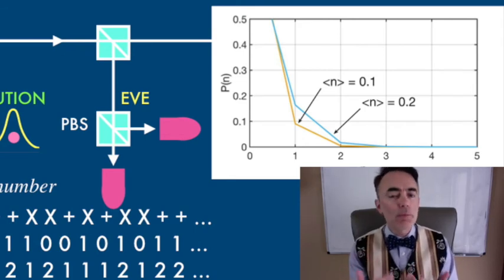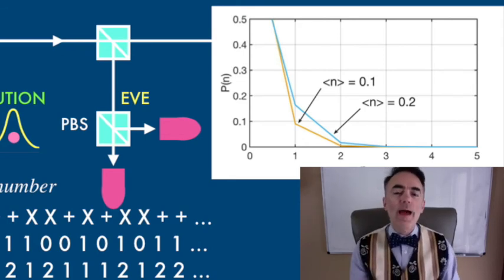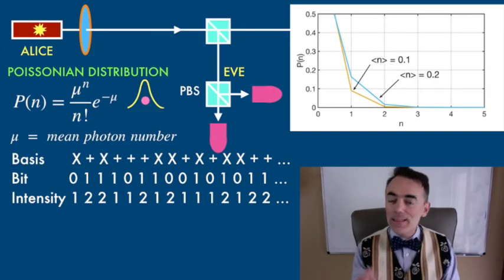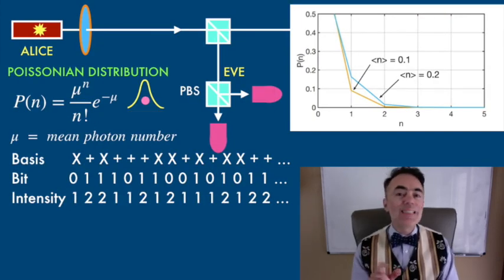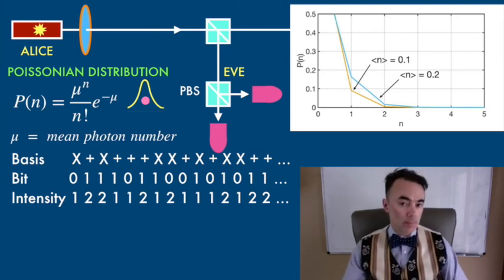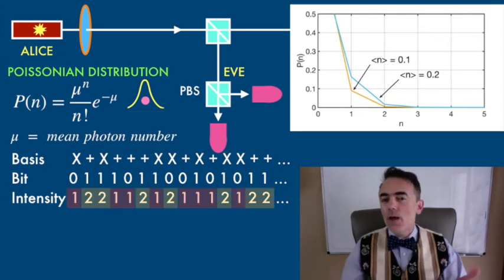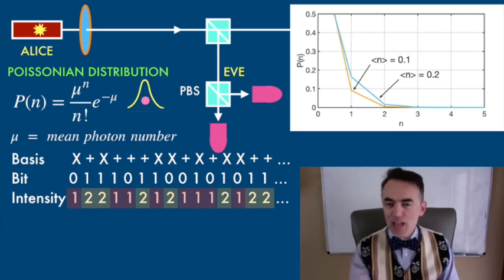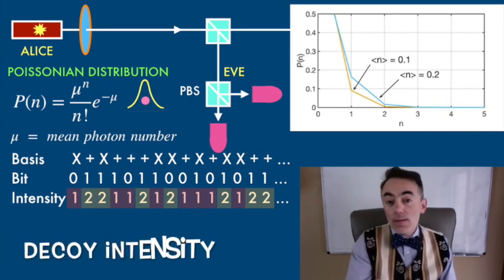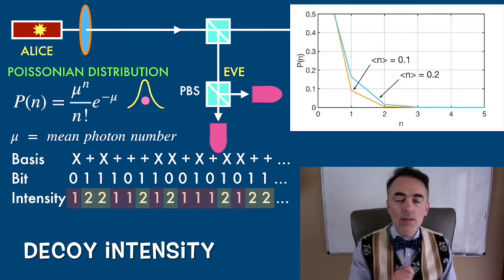Alice can later check what Bob received and see if what he received is compatible with the intensity she sent. If Alice detects that the distribution of detections is unevenly detected by Bob, she has caught the presence of Eve. Alice has sent a decoy intensity to fish Eve in the process.